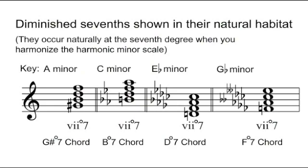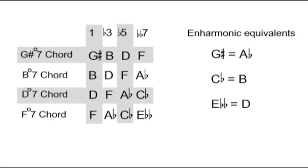The complex key signatures as well as the additional accidentals make it very hard to spot any significant connection between these four chords, until we zoom in and work out the names of the notes in each chord. I've done this on the left by applying the diminished seventh formula — one, flat three, flat five, double flatted seventh — to the major scale of the root note of each chord. And on the right I've listed the enharmonic equivalents that show up when we do this.